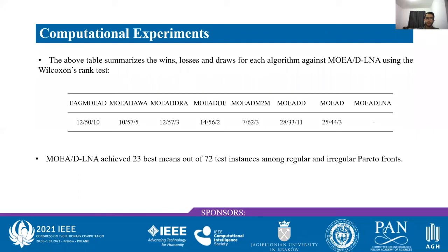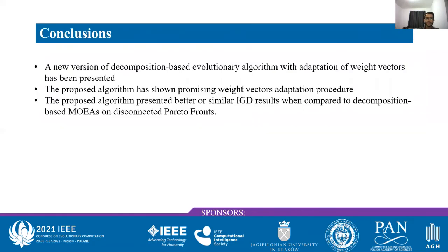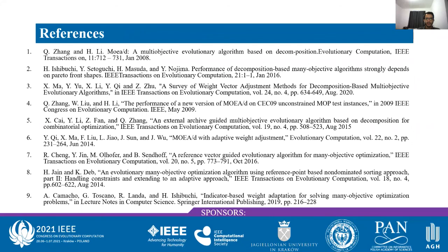I will show the table that summarizes wins, losses, and draws for each algorithm against MOEA/D-LNA using the Wilcoxon rank test. Our algorithm won many of the runs and achieved 23 best means out of 72 test instances among regular and irregular Pareto fronts. In conclusion, we presented a new decomposition-based evolutionary algorithm with a weight vector adaptation procedure that has shown promising results, with better or similar IGD performance compared to other algorithms, especially on disconnected Pareto fronts. Thank you.